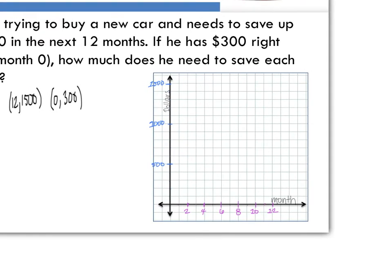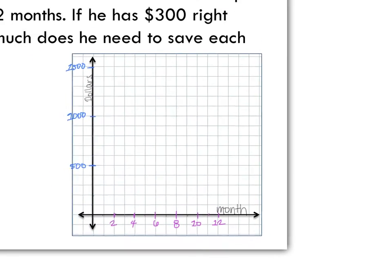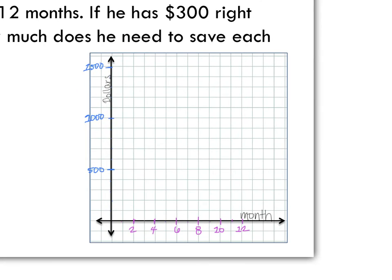Actually I already started the graph for you. If this is the month, if we have in month twelve we want fifteen hundred dollars so that's going to be somewhere up here. And then in month zero we have three hundred dollars so it's going to be right here.